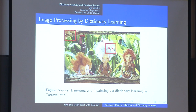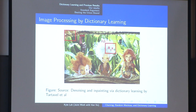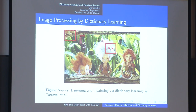Image processing was actually one of the first places where dictionary learning appeared. I've stolen this image from a presentation by Tardevel and co-authors. In general, think of the image as a matrix where each pixel value is an entry. The common technique is to look at overlapping patches of the image, and you can think of each patch as a column vector in our original problem. Each of these patches is a signal or column of the matrix Y, and with an appropriate dictionary learning algorithm you can reconstruct a dictionary that approximates each of these patches with very few linear combinations of the elements.